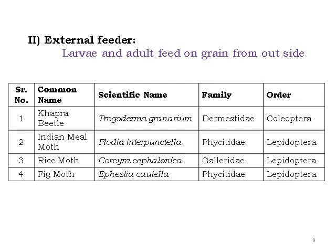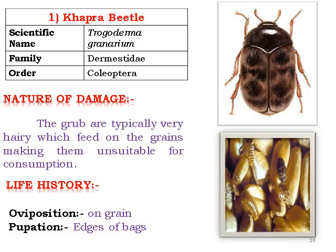External feeders — larvae and adults feed on the grain from the outside. These include the Khapra beetle (Trogoderma granarium), Indian meal moth (Plodia interpunctella), rice moth (Corcyra cephalonica), and fig moth (Ephestia cautella). Mostly these are from Order Lepidoptera; only the Khapra beetle is from Order Coleoptera.